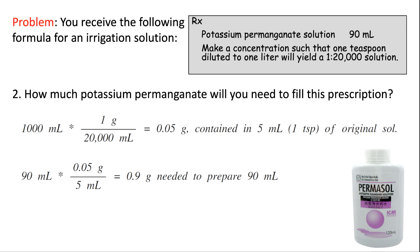So, 0.9 grams of potassium permanganate dissolved in 90 mL gives the correct concentration — such that taking 5 mL and diluting to 1,000 mL yields a 1:20,000 solution. The conceptual key is starting with the final dilution and working backwards to find the concentration needed at each step.